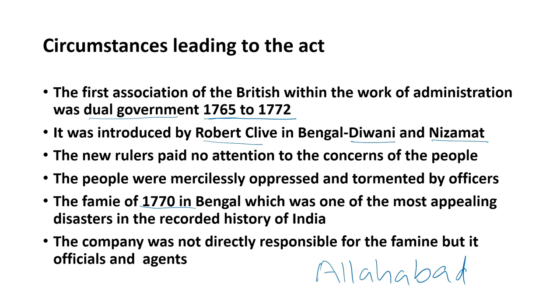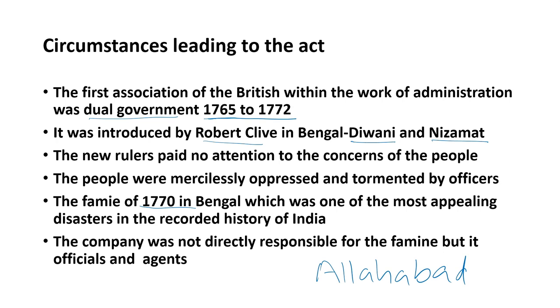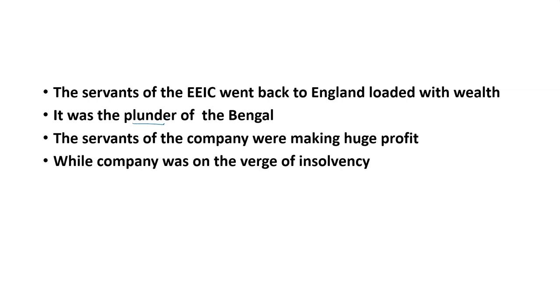Lakhs of persons died in the great famine of Bengal of 1770. The British government did not take any concrete famine relief measures, leading to a heavy toll of life. It was one of the most appalling disasters in the recorded history of India. One thing to keep in mind is that the English East India Company was not directly responsible for the disaster, but the officials and agents of the Company were mainly responsible. The servants of the Company amassed huge wealth through plunder at the cost of Bengal.